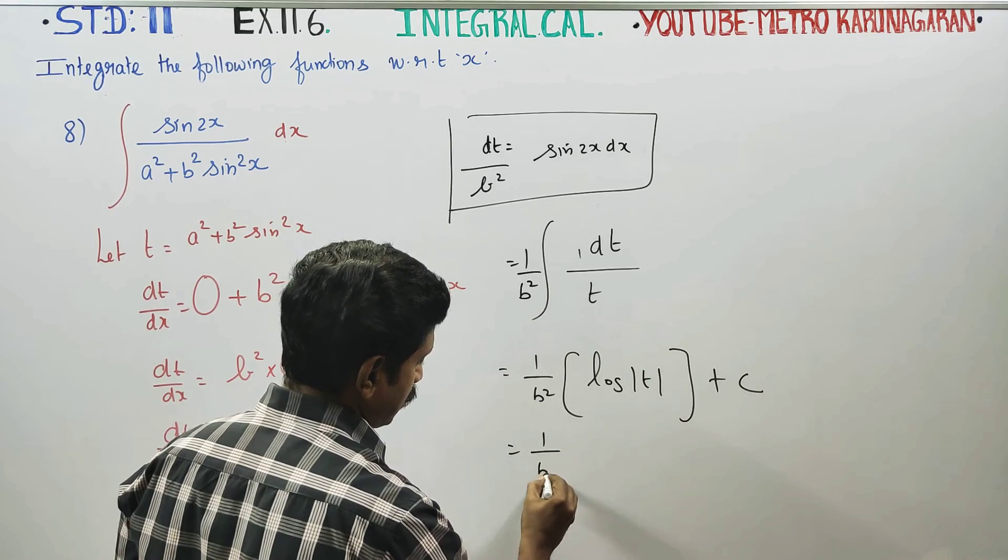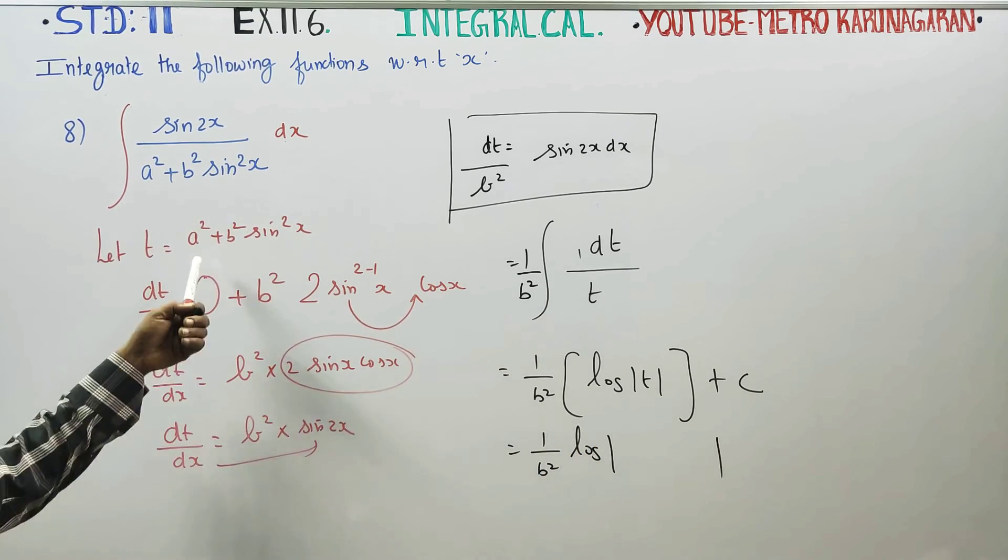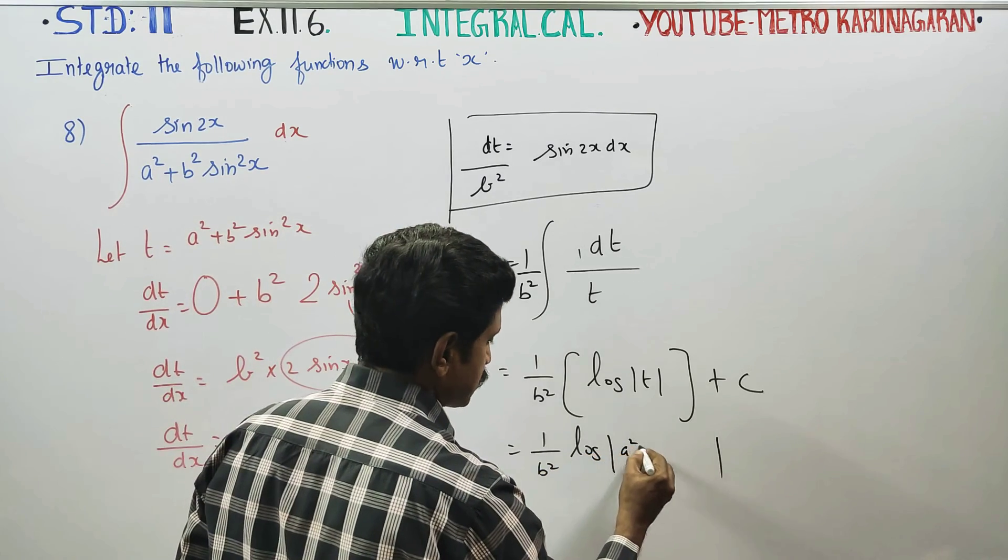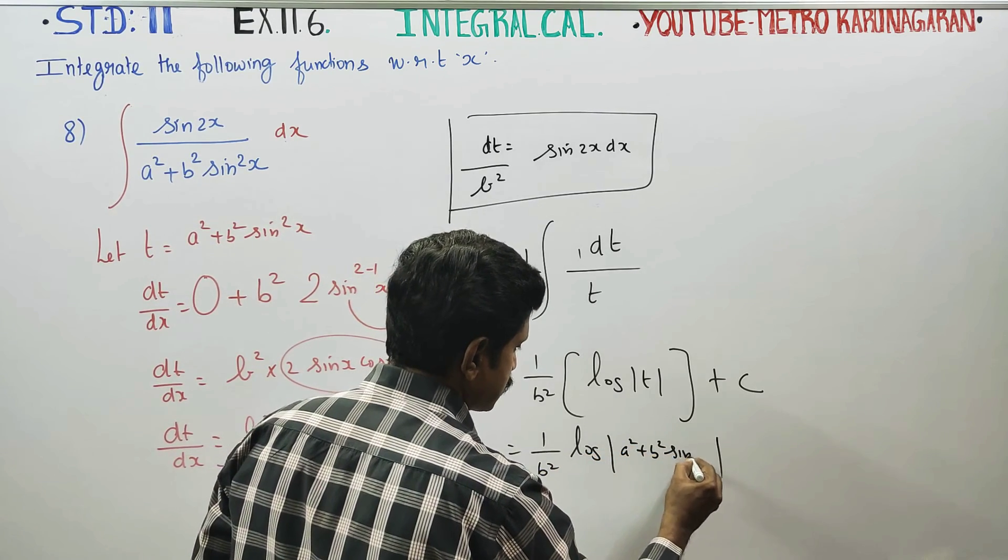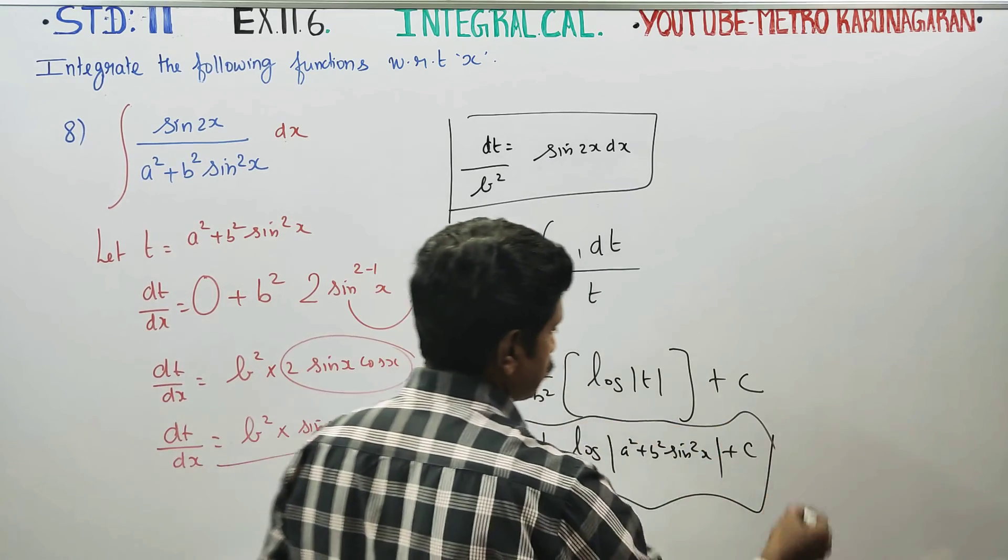Then, 1 by b square logarithm of t. For the value of t, you can use a square plus b square, a square plus b square sin square x plus c. This will be your final answer. Okay? Thank you.